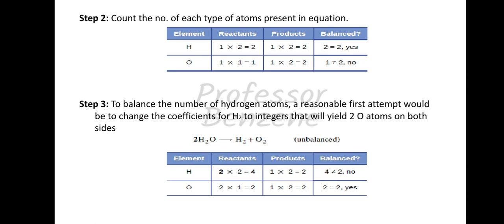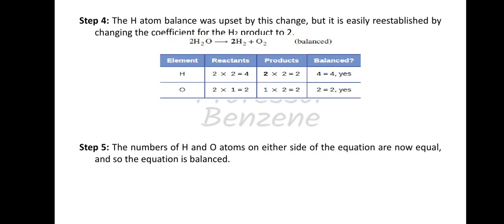To balance the oxygen atoms, we change the coefficient of H2O. A reasonable first attempt is to place a coefficient of 2 in front of H2O, which yields 2 oxygen atoms on both sides. But then we must also balance hydrogen: 2H2O gives 4 hydrogen atoms on the left. So the balanced equation becomes 2H2O → 2H2 + O2. Left side: 4H, 2O; right side: 4H, 2O. The equation is now balanced.